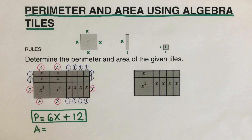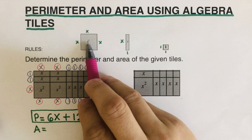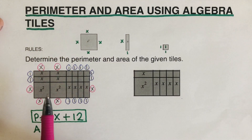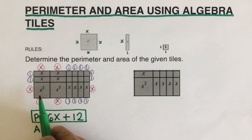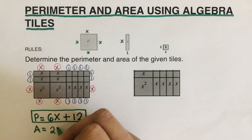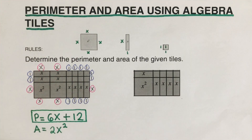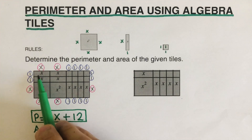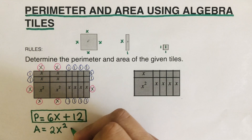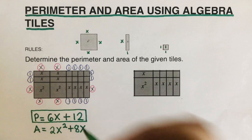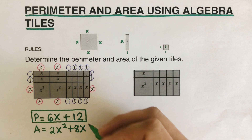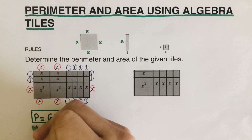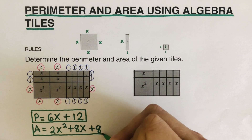Now let's find the area. The number inside each tile is its area, so we count and combine all the areas. We can see two x² tiles — so 2x². Count the x tiles: one, two, three, four, five, six, seven, eight — that's plus 8x. Then count the ones: one through eight — that's plus 8. So the area is 2x² + 8x + 8.